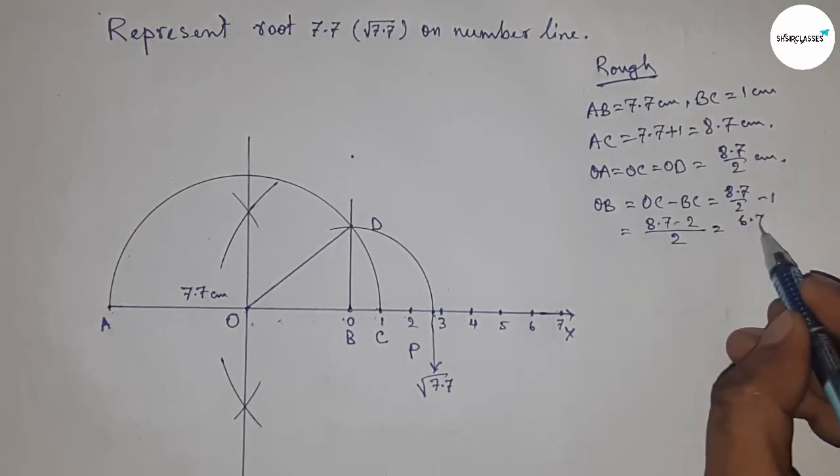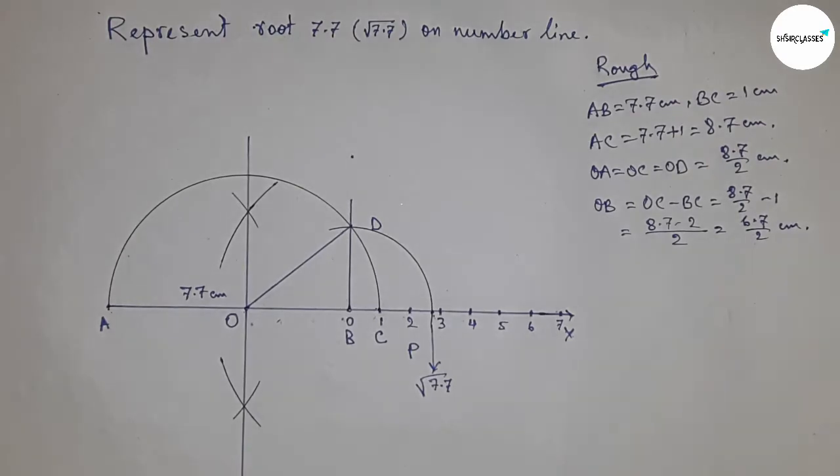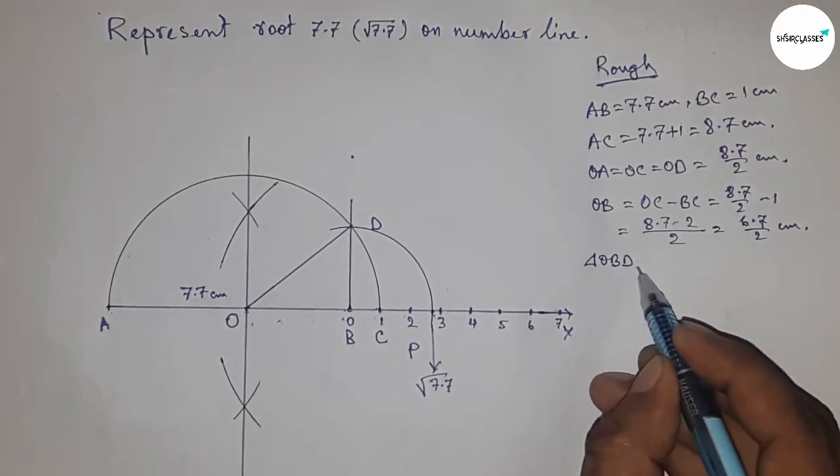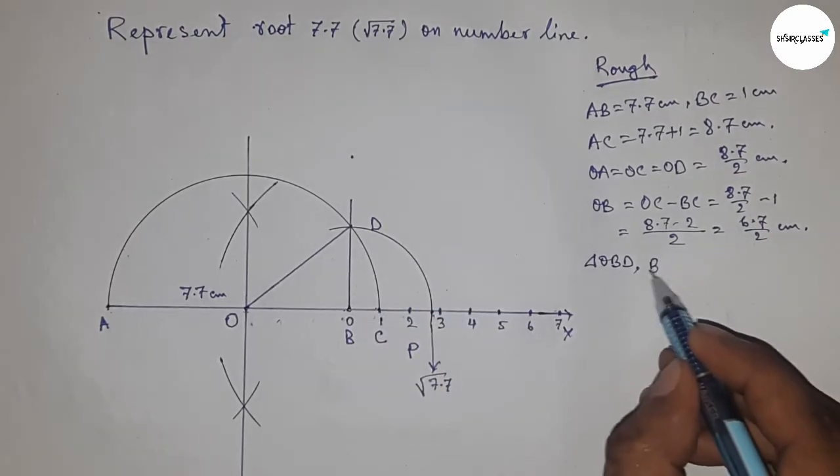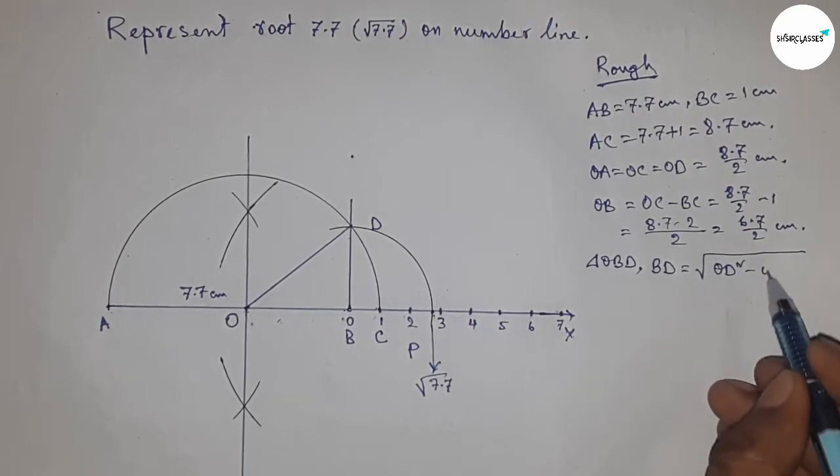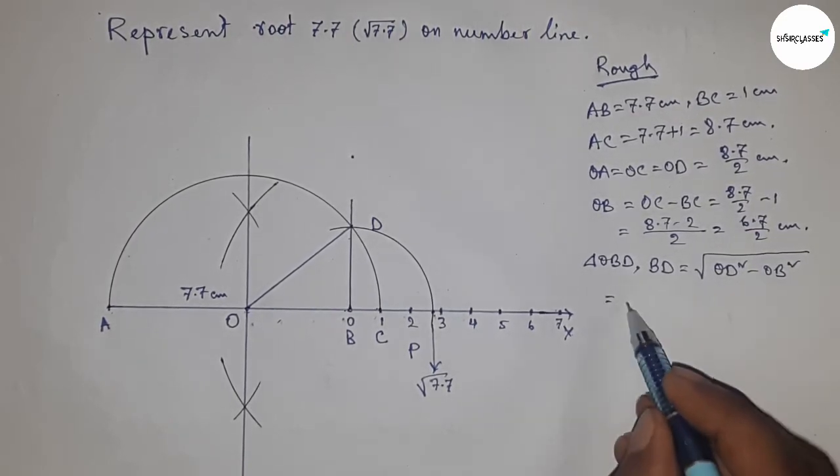From right angle triangle OBD, using the Pythagorean theorem, BD = √(OD² - OB²). Now putting the values of OD and OB.